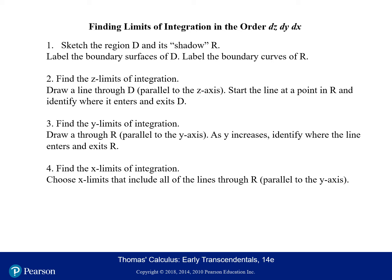You can think of it as a shadow of the region R, and this shadow is going to be in the XY plane. So you're drawing a three-dimensional region and also its two-dimensional shadow, and you want to label all of the boundaries of your three-dimensional region as well as the two-dimensional region R. Step two: to find the Z limits of integration, you're going to draw a line going through the region D parallel to the Z axis.